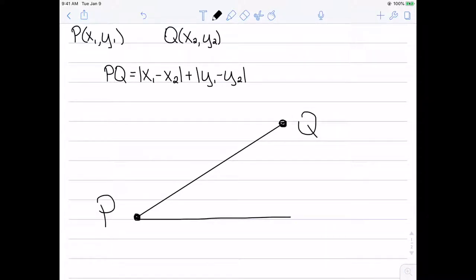With this method, essentially what we're doing is we're only being able to move up and down and left and right. And that's how we determine our distance, the length of this plus the length of this.